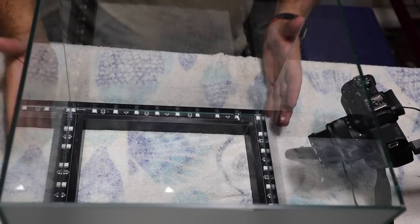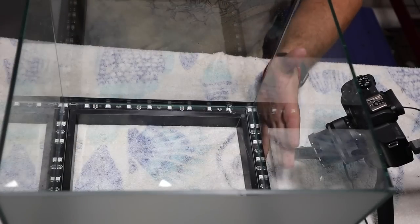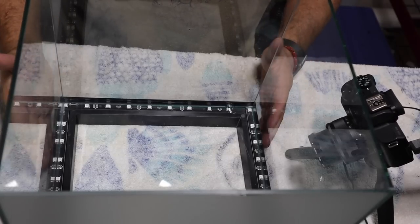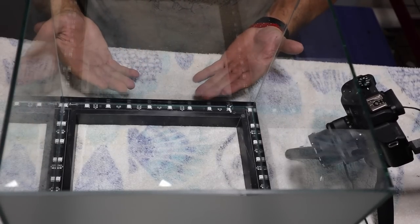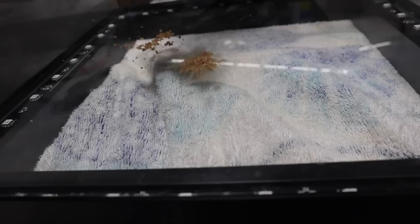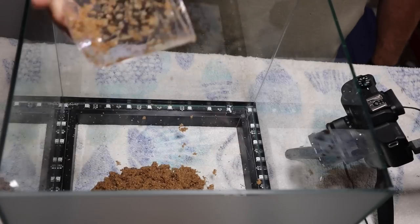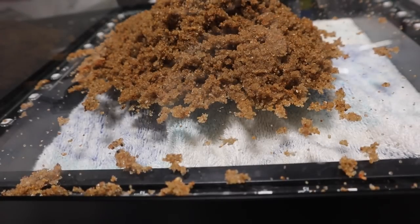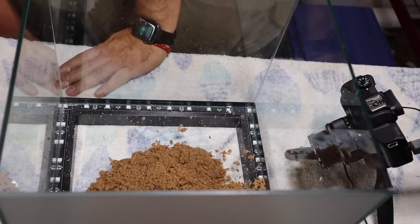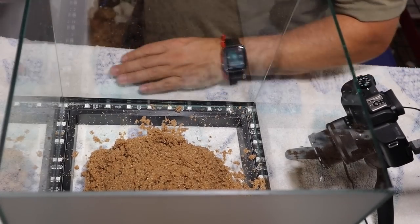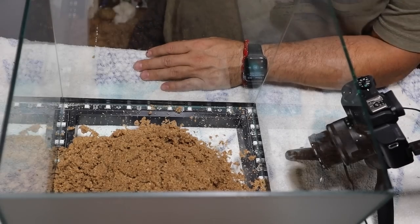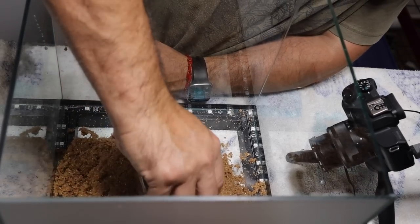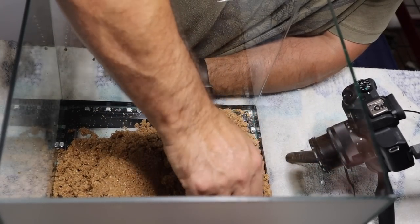All right guys, we are ready to scape this modern betta aquarium right here, and we're going to be using some basic elements to scape this entire setup to give it a nice modern look. We are going to start with my absolute favorite substrate, and that is some pool filter sand. The reason I like pool filter sand is it is a silica-based sand, it's not overly dirty when you put it in your tank, and you can get this stuff for about ten dollars for a 50-pound bag.